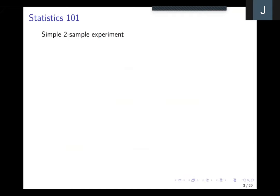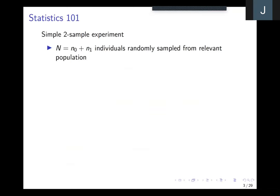I'm going to go right back to basics — the very first statistics course you ever had. Not very long into that you would have discussed the two-sample experiment, where we have two groups: we sample from a relevant population n0 individuals who will have one treatment — let's say chalk tablets — and n1 individuals who will have some other treatment, perhaps aspirin, to see if these headache sufferers will improve if they're given one treatment or the other.